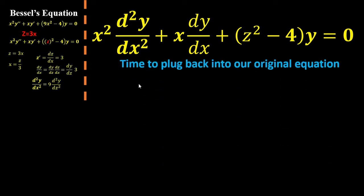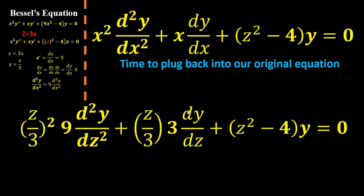Now it's time for us to plug everything back into our original equation. We have the x's, we have the derivatives, so we can go ahead and plug them in. Here, the x is simply z over 3, just like we defined. The second derivative from here. z again. First derivative from right here. And the z, we already plugged it in. There's no more change needed. Negative 4 is what it is. And y, again, no change needed. Equals 0.